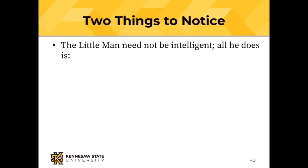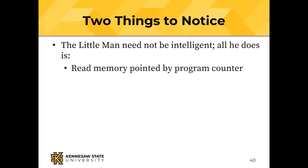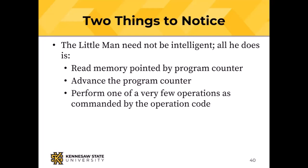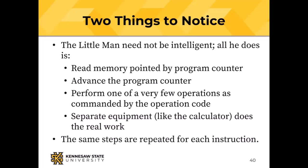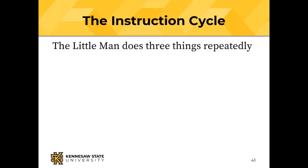The little man doesn't need to be intelligent — he does one of a very few things: read the memory location pointed to by the program counter, advance the program counter, perform one of a very few operations indicated by the operation code. Separate equipment like the calculator does the real work, and each of those steps is repeated for each instruction.